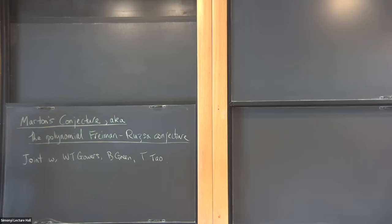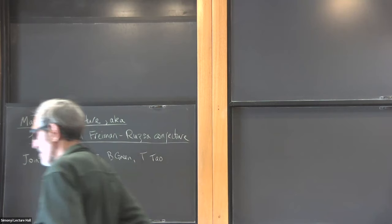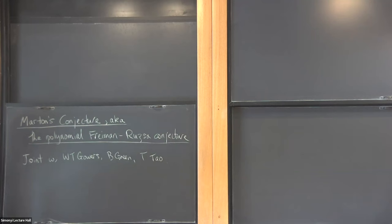I want to talk about the polynomial Freiman-Ruzsa conjecture, and before I get into the weeds, I want to give some motivation for the conjecture and why you might care. One of the great things about it is that there are many equivalent formulations. I want to be slightly controversial and tell you about a non-standard formulation first, because I think it's the easiest to see why it's a natural statement.